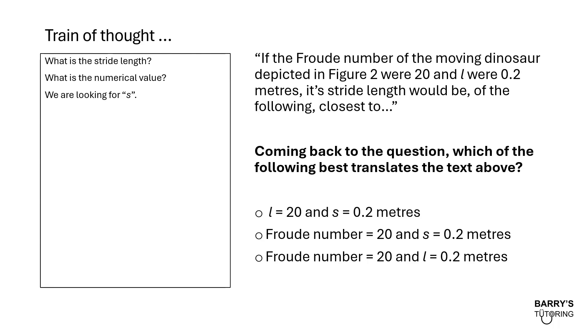We're coming back to the question stem now. Which of the following best translates the text above? Is it saying L is equal to 20 and S is equal to 0.2? Or is it saying the Froude number is 20, S is equal to 0.2? Or is it saying the Froude number is 20 and L is equal to 0.2? Have a read which of these options is the best.